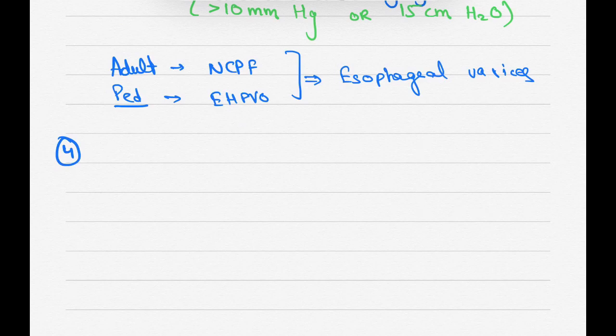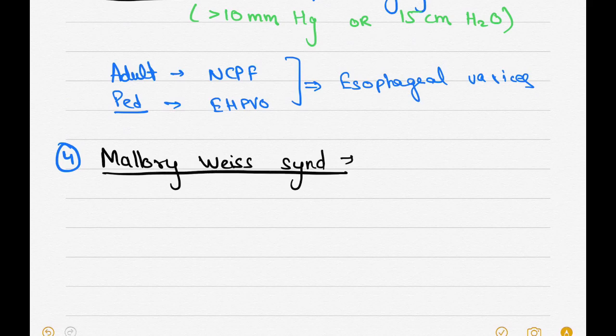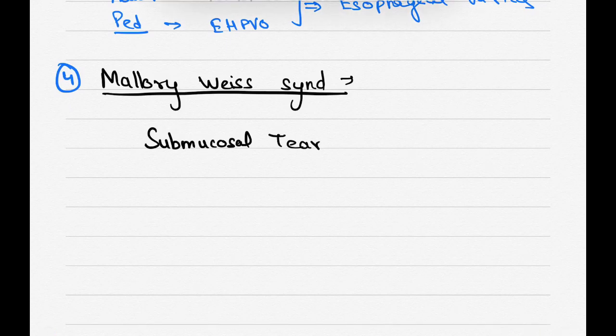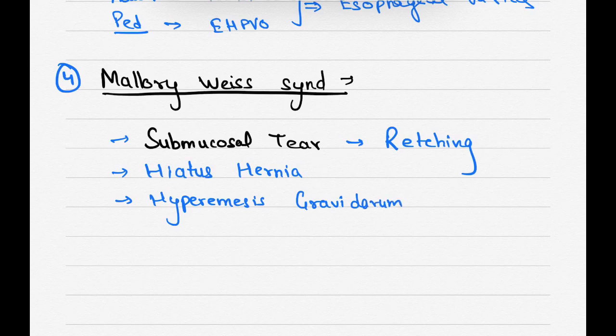The fourth cause of upper GI bleed is Mallory-Weiss syndrome. This is also important for MCQs. So, what happens in the Mallory-Weiss syndrome? Patient will give you the history of excessive intake of the alcohol and followed by retching episodes. So, it causes submucosal tear due to retching, due to excessive intake of the alcohol. The second cause of Mallory-Weiss syndrome is hiatus hernia and the third cause is hyperemesis gravidarum which is present in the pregnancy.